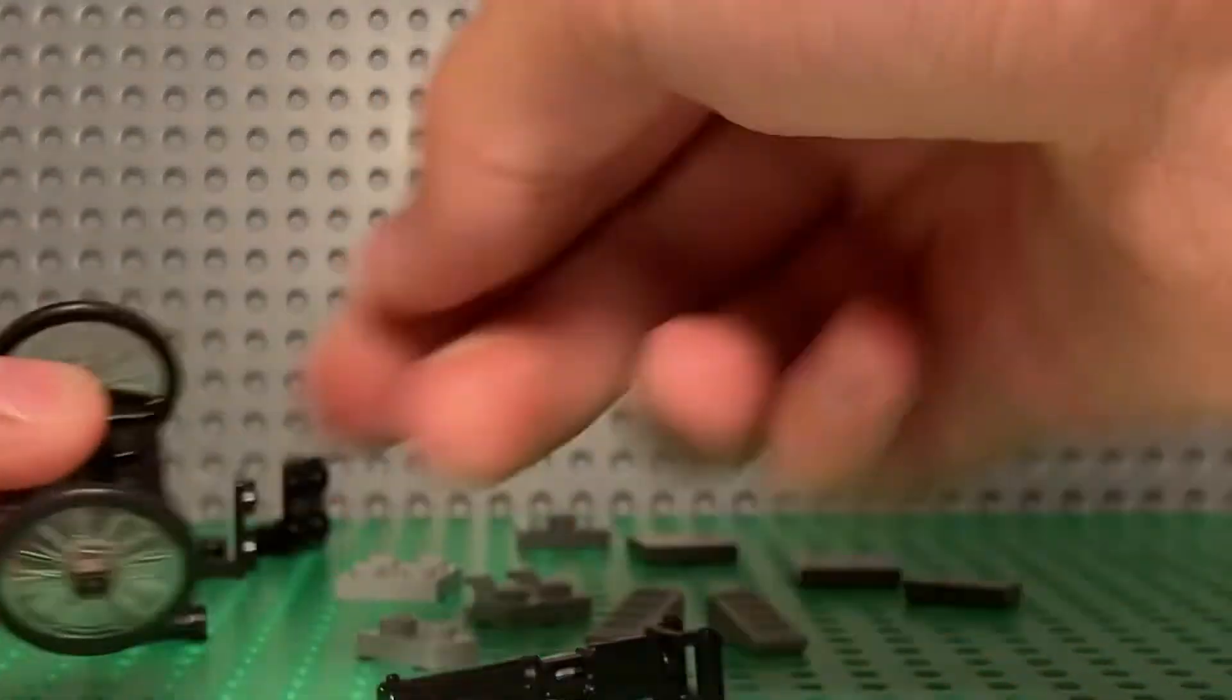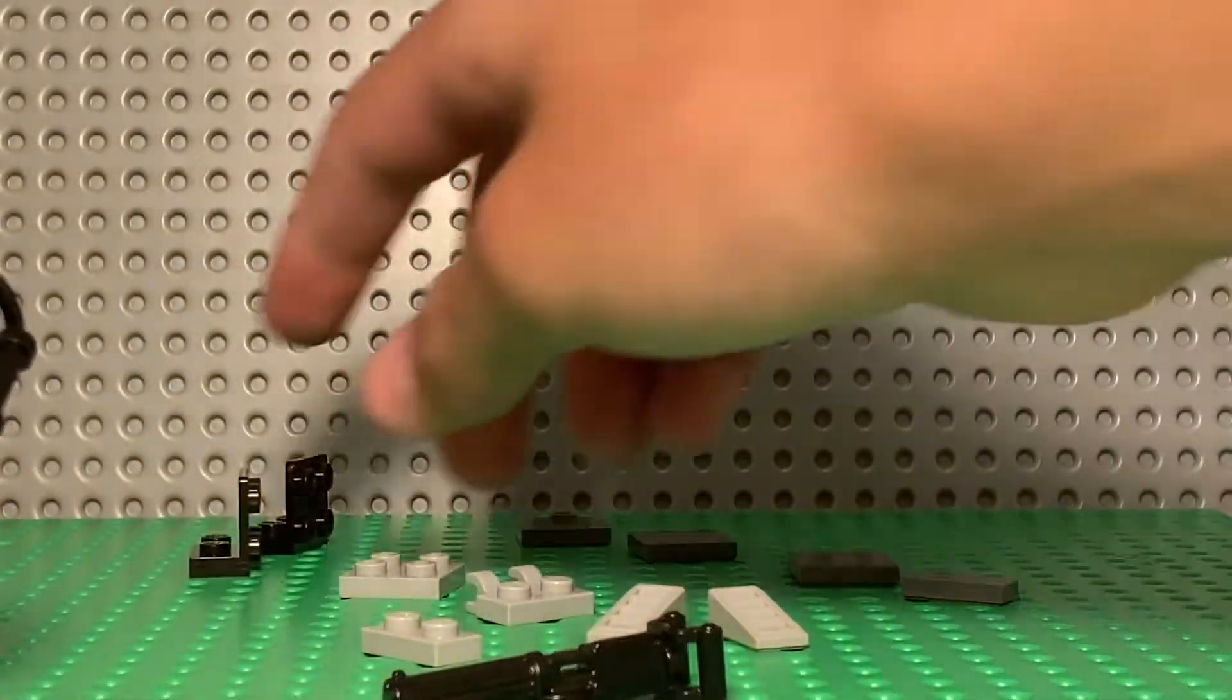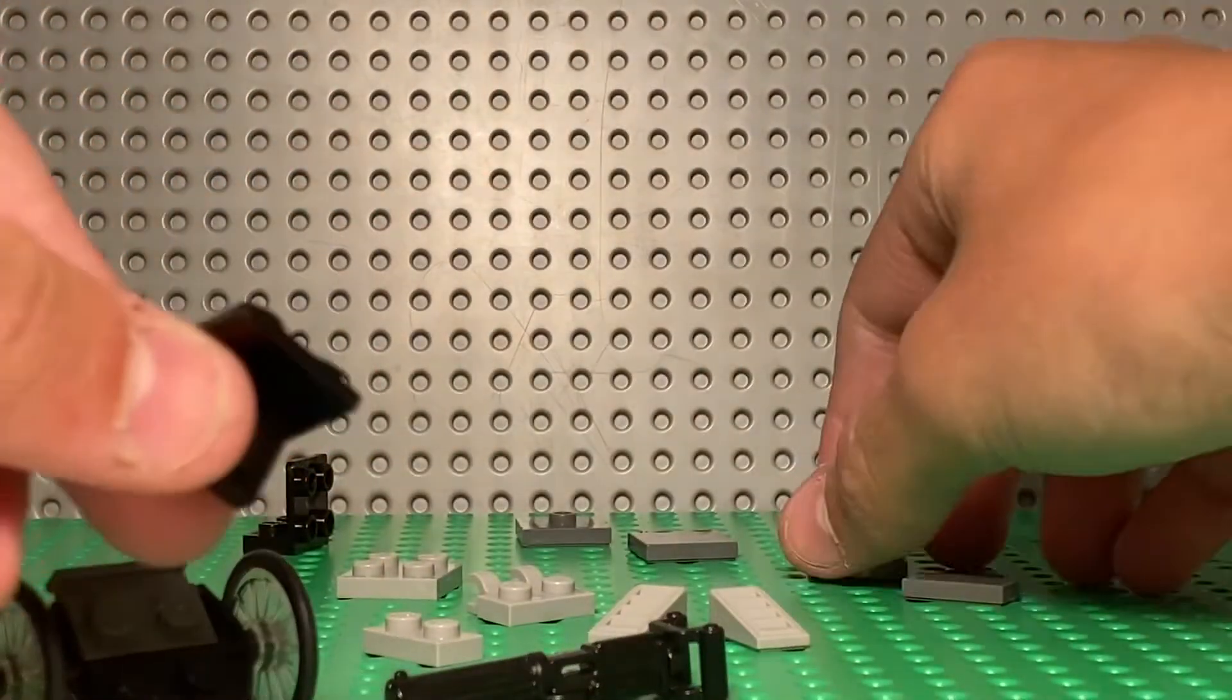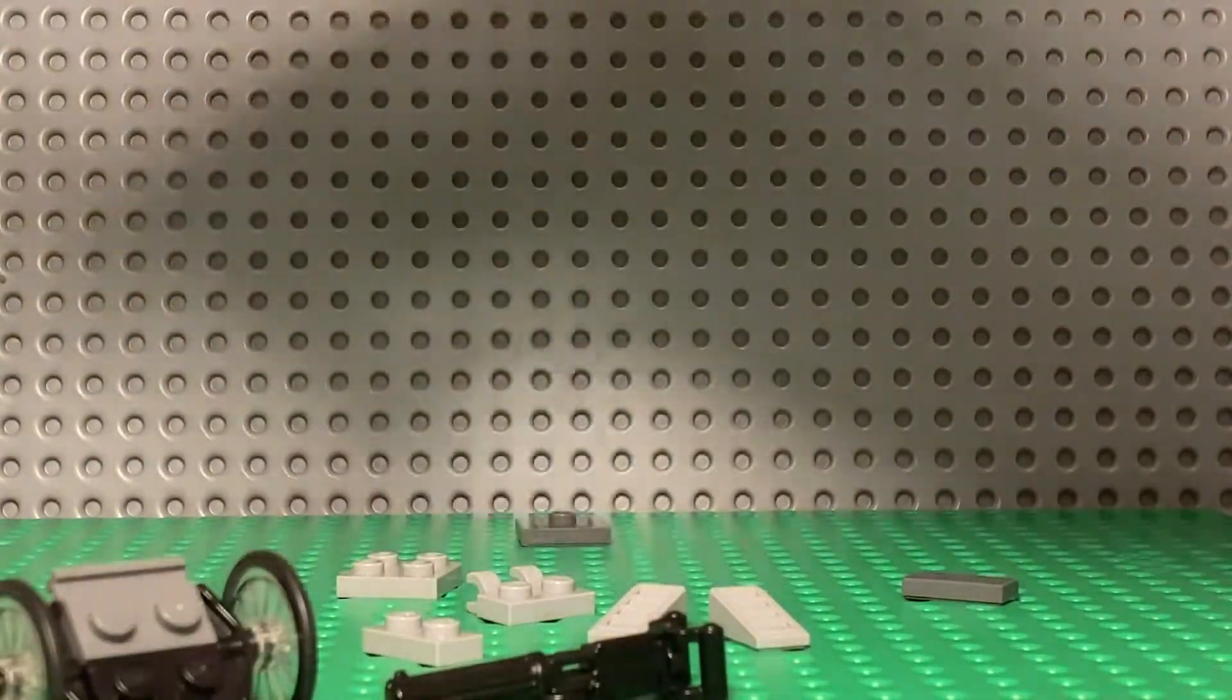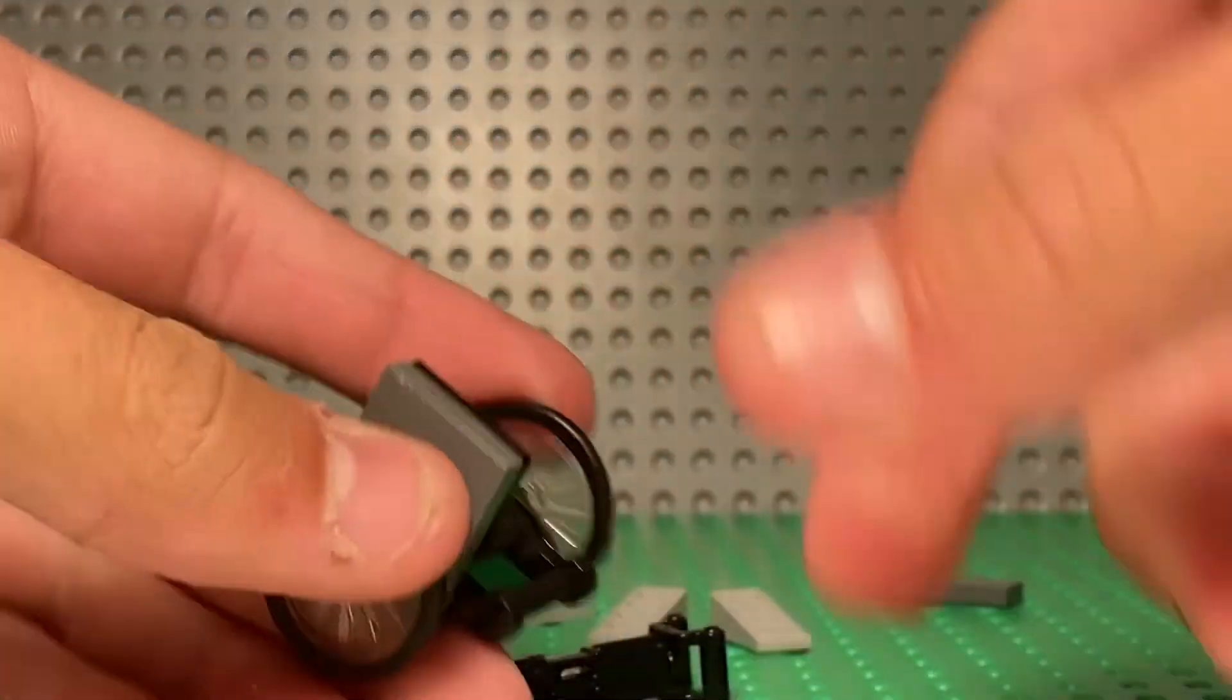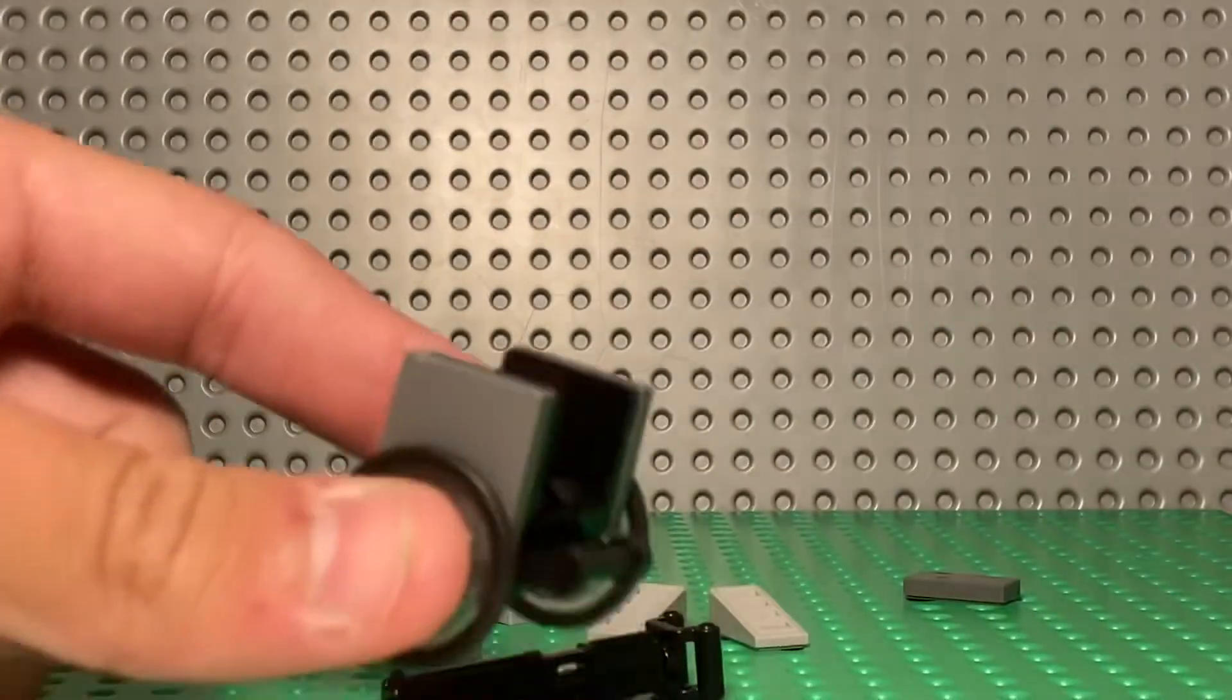Then you're going to get this one right here. Put it on the back. And then you're going to get both of these. Put these flat gray tiles on them. And put them on either side. So there's space in the middle. Like that. That's what it looks like so far.